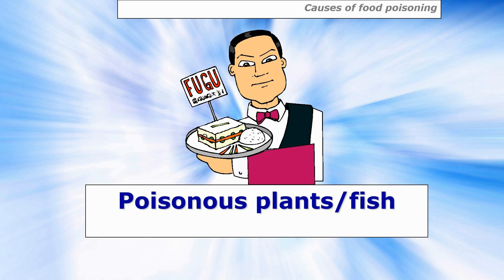If you like your fish undercooked, it's better to freeze the fish first, because all fresh fish contain parasitic worms that can get into your intestines and bloodstream. It is UK health and safety law that fish used raw — for example in sushi — must be frozen for at least 24 hours, then defrosted and used as fresh, because the freezing process kills the parasite.